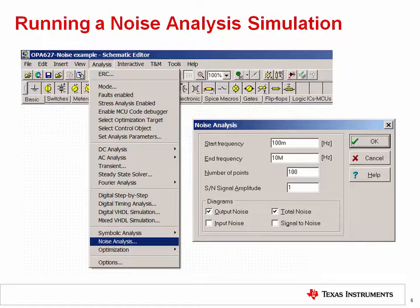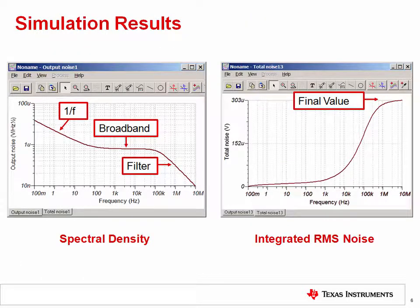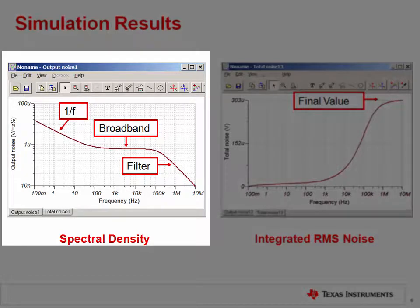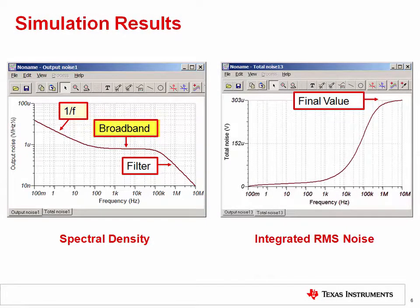This slide shows the simulation results. The graph on the left is the spectral density plot called output noise by TINA-TI. Note that the 1 over f, broadband, and filter regions are clearly visible. The filter region results purely from the op amp's inherent bandwidth limitations, since there is no filter on the circuit.